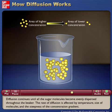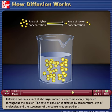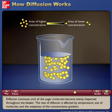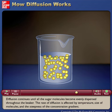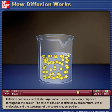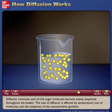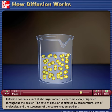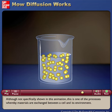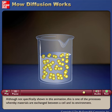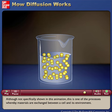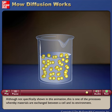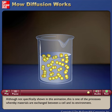Diffusion continues until all the sugar molecules become evenly dispersed throughout the beaker. The rate of diffusion is affected by temperature, size of molecules, and the steepness of the concentration gradient. Although not specifically shown in this animation, this is one of the processes whereby materials are exchanged between a cell and its environment.